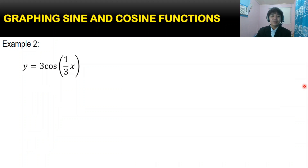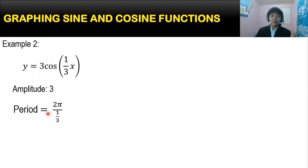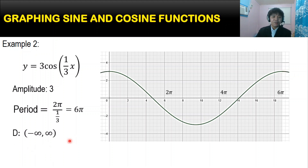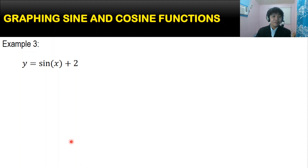For example 2, y equals 3 cosine(⅓x). The amplitude is 3, which is the coefficient of our cosine. The period is equal to 2π over ⅓, so the period is 6π. Here is the graph of the function — it repeats in the interval of 6π. The domain is the set of all real numbers, and the range goes from negative 3 to positive 3.